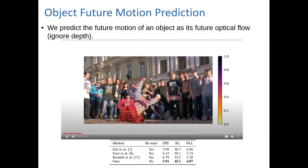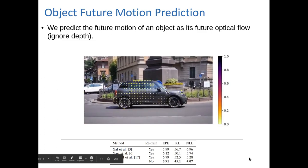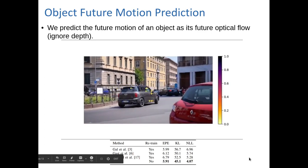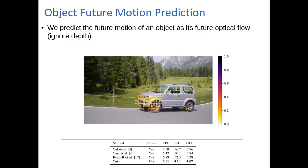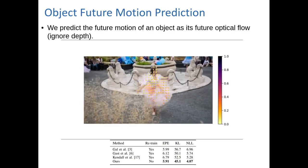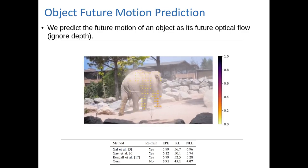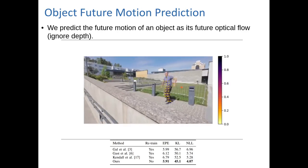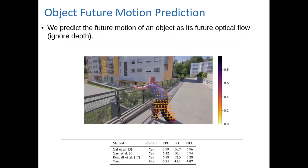In object future motion prediction, we predict how an object will move in the future, but of course this also has uncertainty. And again, we perform this task with higher accuracy and with better uncertainty estimation than state-of-the-art approaches.